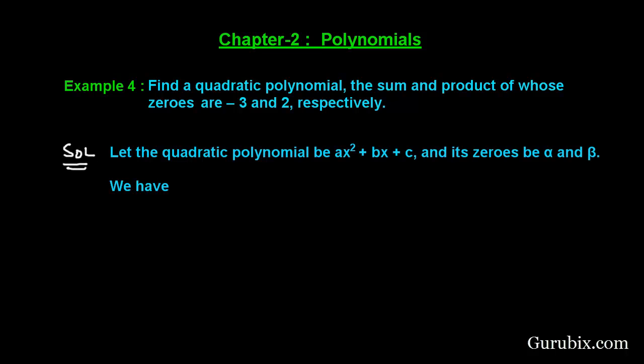First of all, let the quadratic polynomial be ax² + bx + c, and its zeros are α and β. Then we have α + β = -3 and αβ = 2.